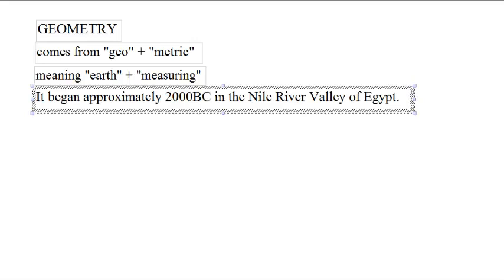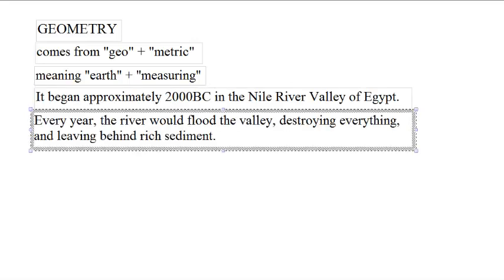The problem was that when people first discovered agriculture, they generally had one kind of seed to plant, and they would plant it over and over in the same way, in the same fashion, and they would exhaust the soil. However, every year the Nile River would flood, and that would destroy everything in the valley, but it would leave behind a rich sediment, which meant they always had fertile soil. So they could have this long-running civilization — plant the same crops, follow the same rituals, have the same traditions — and they didn't exhaust their soil because they got new soil every year.